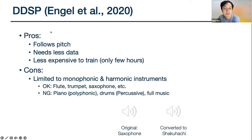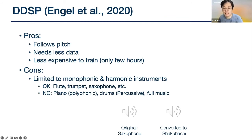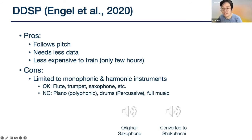The pros of DDSP are that it follows pitch, needs less data, and is a lot less expensive to train — you only need a few hours. But the cons are that it's limited to monophonic and harmonic instruments. You can train on wind instruments like flute, trumpet, saxophones — but if you have piano performances where multiple keys are played at the same time, that would cause problems. Drums are percussive and don't really have a notion of pitch, which would also be a problem. Songs with multiple instruments wouldn't work out either.